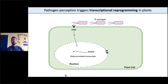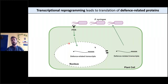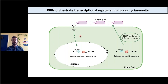Also in a very simplified manner, plants can perceive pathogens — can perceive moieties of pathogens using pattern recognition receptors or PRRs. And this triggers a signaling cascade that eventually leads to transcription of defense-related genes. These transcripts are eventually exported to the cytoplasm where they will be translated into proteins to mount a defense response. So basically the sensing of the pathogens leads to a reprogramming of the plant transcriptome to mount a defense response.